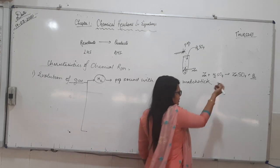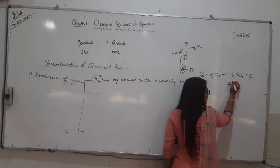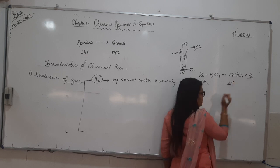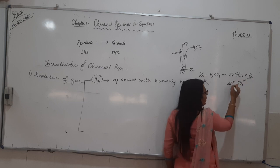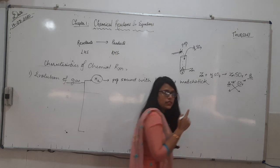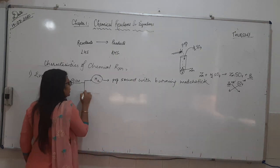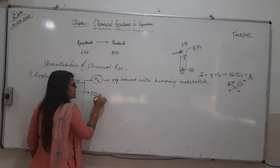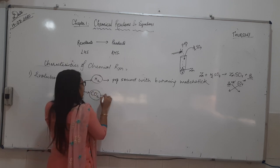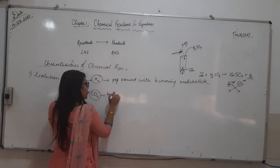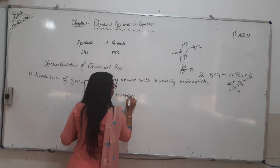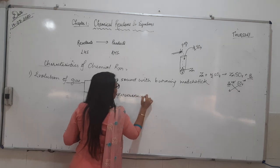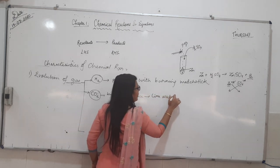In this reaction, zinc has a charge of +2, sulfate is SO4 minus 2; the 2 and 2 cancel out and ZnSO4 is formed — zinc sulfate. Now, for determining the presence of CO2 gas — that is carbon dioxide gas — this gas will produce brisk effervescence and it will turn lime water milky.